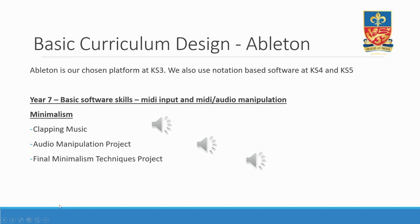We then looked at using the audio manipulation capabilities in Ableton to create a piece based on Come Out and It's Gonna Rain by Steve Reich. This not only gave them experience on Ableton with audio, but allowed them to explore key minimalist techniques such as augmentation, diminution, retrograde, fragmentation, layering and repetition. Their final composition, which was used for their summer exam, was back to MIDI and taught them about structure and textural contrast, as well as incorporating all the techniques learnt so far — both on minimalism and on Ableton.